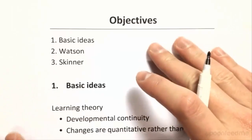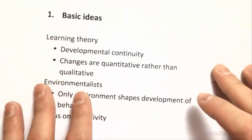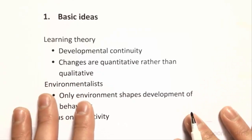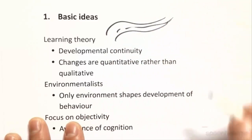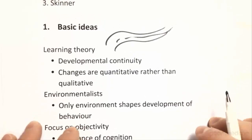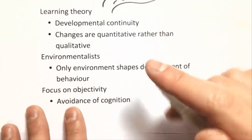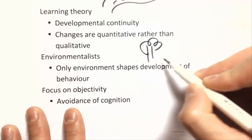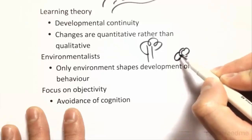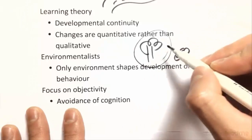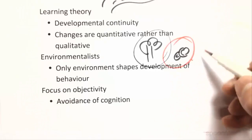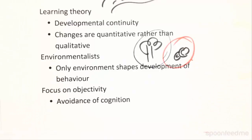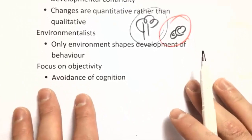Now we'll be looking at behaviorism in developmental psychology and Watson and Skinner's ideas. This is an example of a learning theory, as is the next one we'll look at — social learning. They look at continuity through development, where you develop through learning. They're environmentalists in the nature-nurture debate — it's all about nurture and how we develop through the physical parts of our lives and our behavior. That's behaviorism.